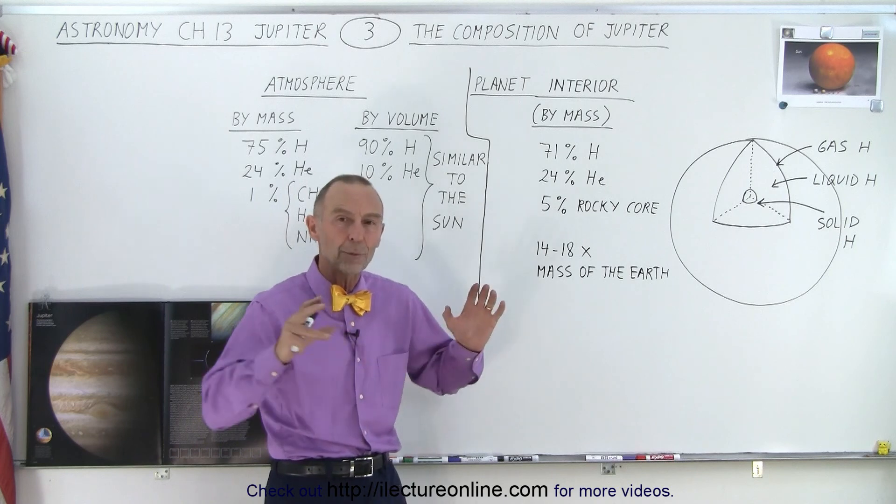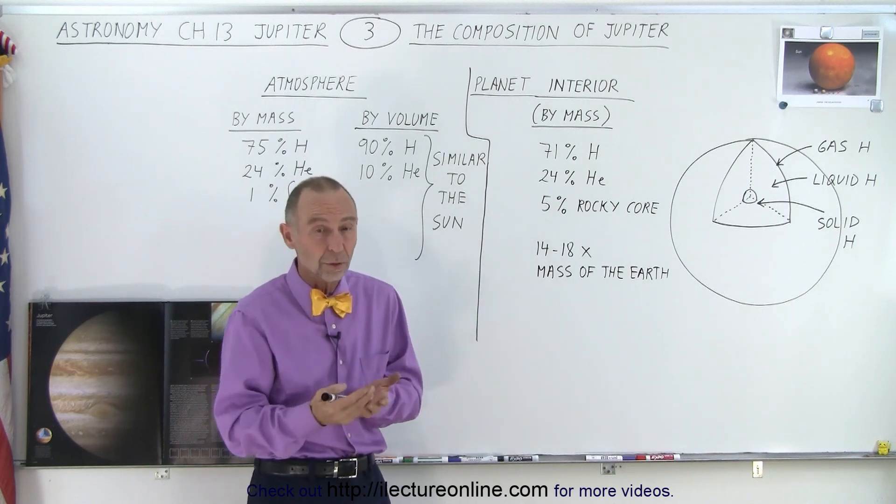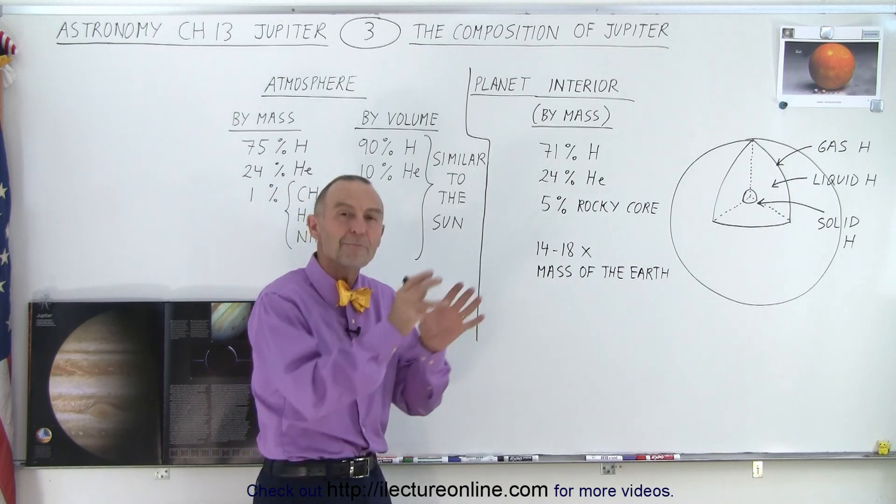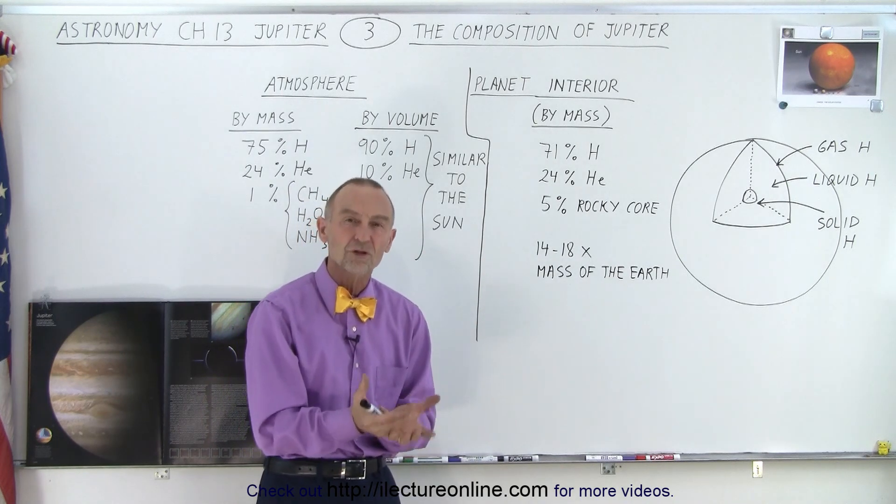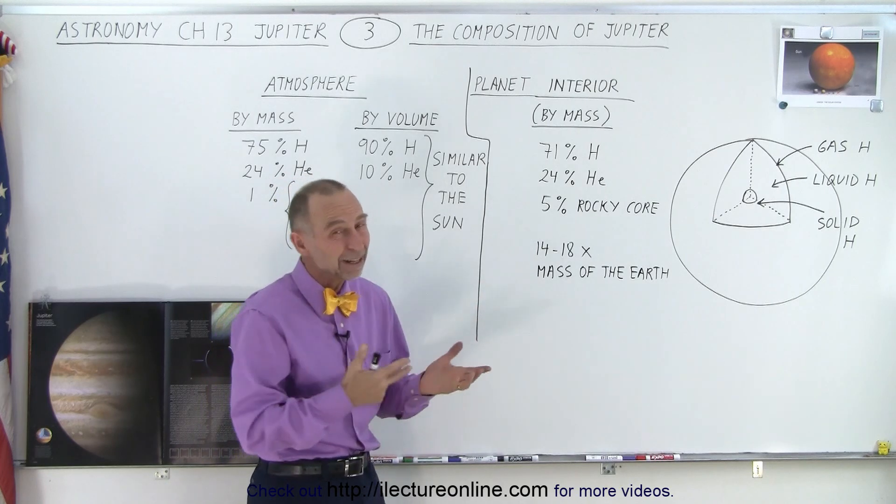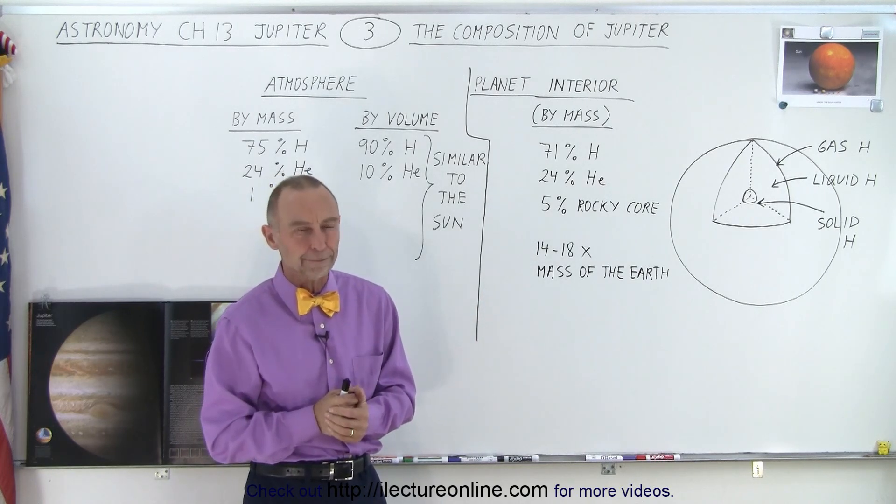But because of the rocky core, that would be diminished. So models then show us that if we have a certain size rocky core in there, it kind of matches the structural shape of the planet Jupiter. And so therefore, now we're fairly confident that there's a rocky core in there.